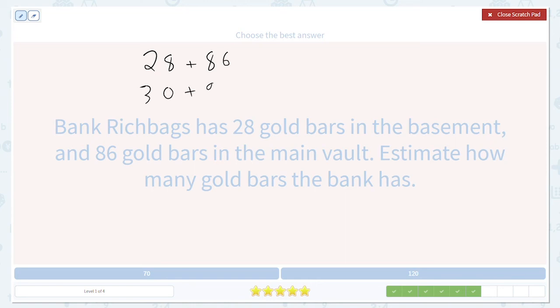And then 86 is going to round up to 90 for the same reason. And we can add those easily. And we get 120 total gold bars.